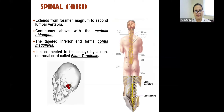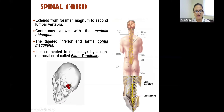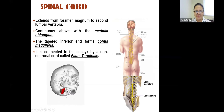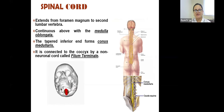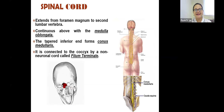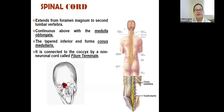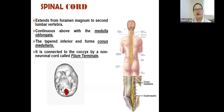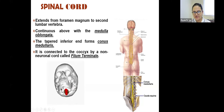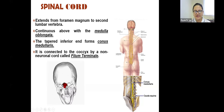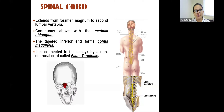The spinal cord extends from the foramen magnum at the base of the skull to the second lumbar vertebrae. It is continuous above with the medulla oblongata, since the spinal cord is an extension of the medulla oblongata. At the inferior end, it is tapered and forms the conus medullaris, which is a cone-like structure. It is connected to the coccyx by a non-neuronal cord called the filum terminale.